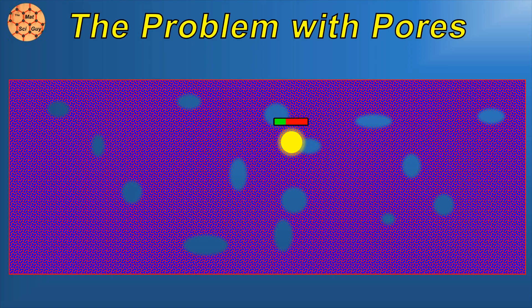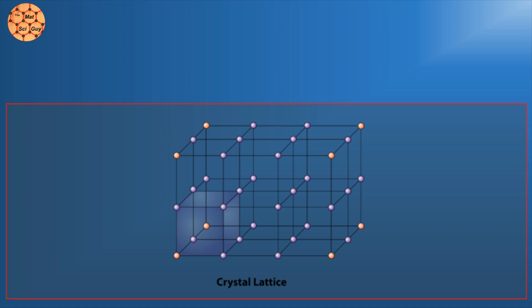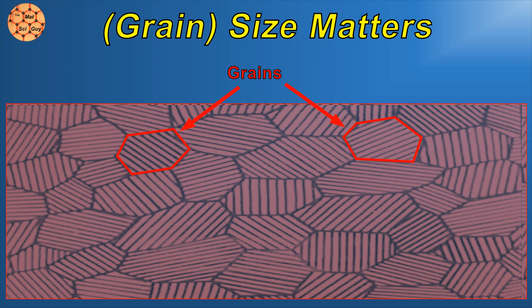A similar problem occurs with crystal structures in the material. Atoms tend to stack in regular units like this, and in most crystalline materials there are many different crystal orientations. Regions of different crystal orientations are called grains, and they can also pose problems for transparency.